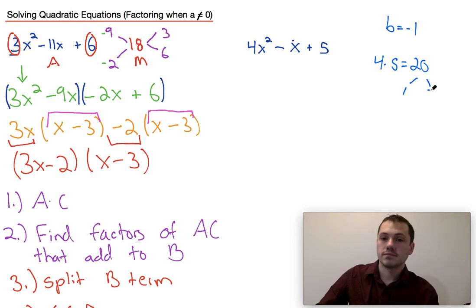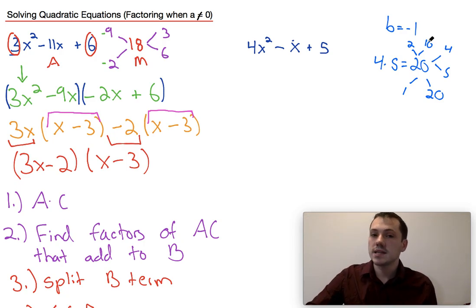So we want to find the factors of 20 that add to negative 1. So there's 1 and there's 20. That doesn't add to 1. There's 4 and there's 5. That doesn't work. 2 and 10. None of these are going to work. And the reason none of these are going to work is in order to multiply to positive 20, both numbers have to be positive or both numbers have to be negative.